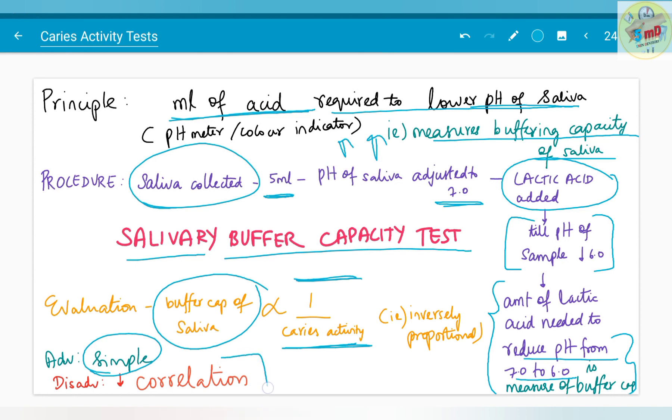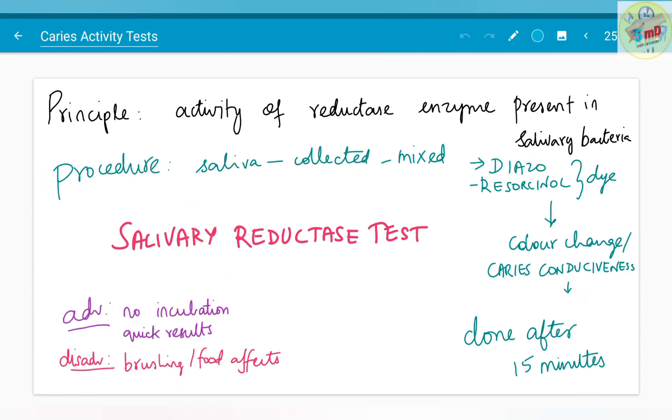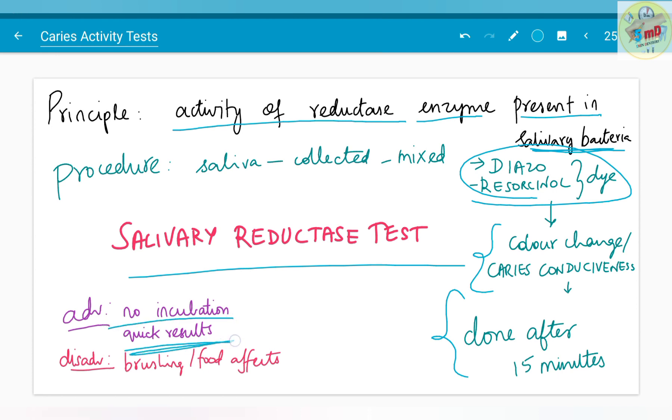The next test is the salivary reductase test. It is based on the activity of the reductase enzyme present in salivary bacteria. The procedure is that saliva which is collected is mixed with diazoracinol dye. The color change or the caries conduciveness is calculated after 15 minutes. The advantage is that no incubation is needed and quick results are observed. The disadvantage is that brushing or intake of food will affect the results.